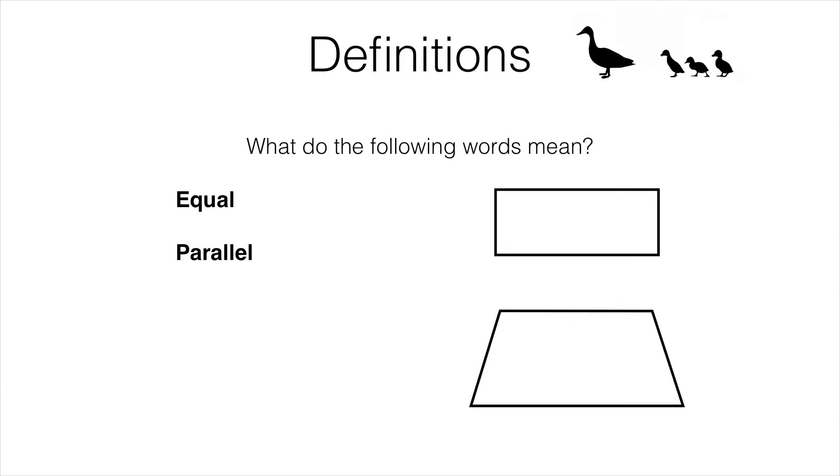Finally we need to know what the words equal and parallel mean in the context of two-dimensional geometry. When we talk about equal we could be talking about equal lengths or equal angles. Let's look at lengths first of all.